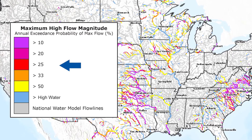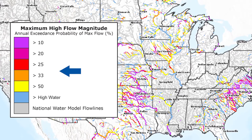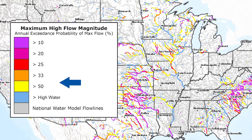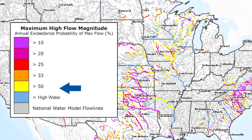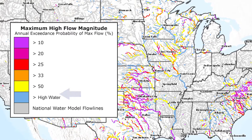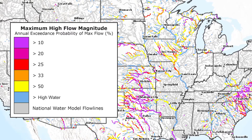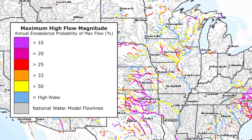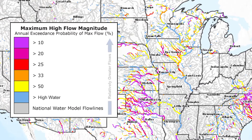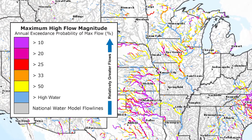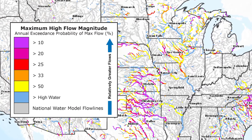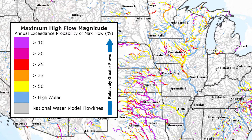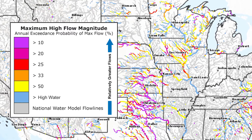Colors provide a visual indication of the maximum forecast stream flow magnitude. Units are annual exceedance probability, known as AEP. Lower AEP values highlight specific river reaches forecast to have greater flows.